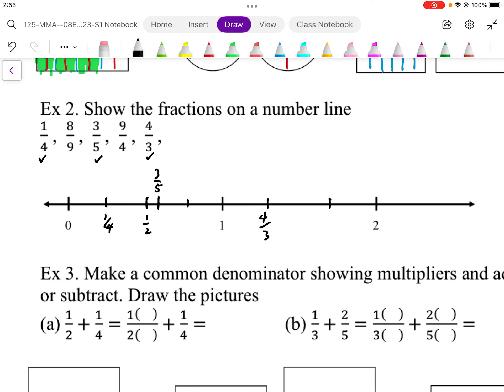8 ninths, I'm going to do this in a different color here. 8 over 9 is going to be pretty close to 1. So I'm going to just estimate it somewhere around here, pretty close to 1.